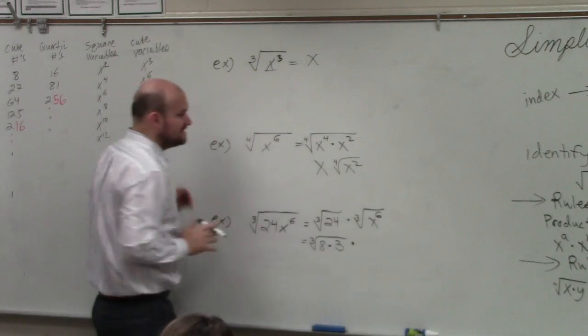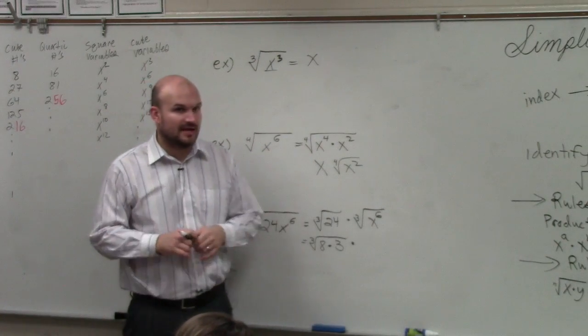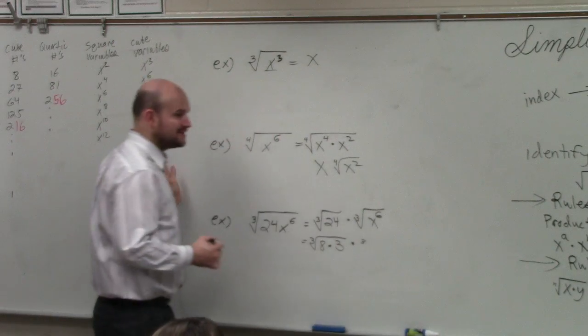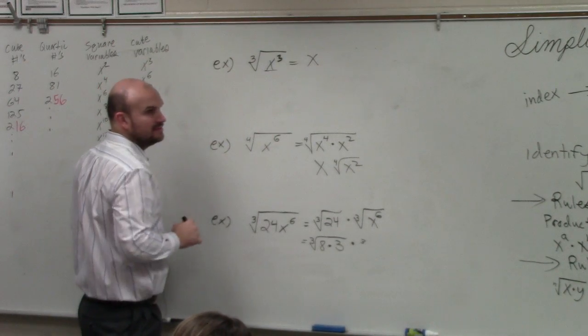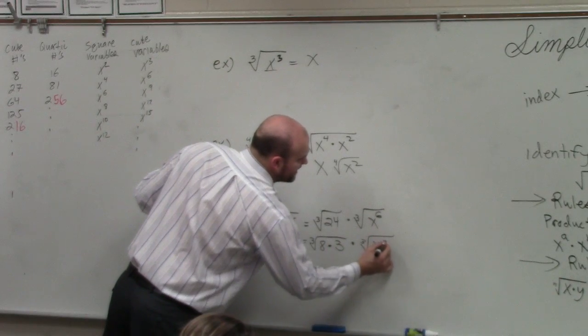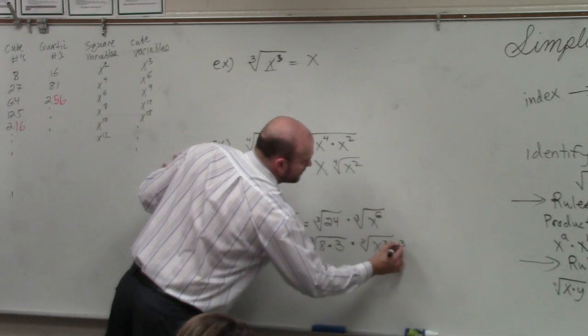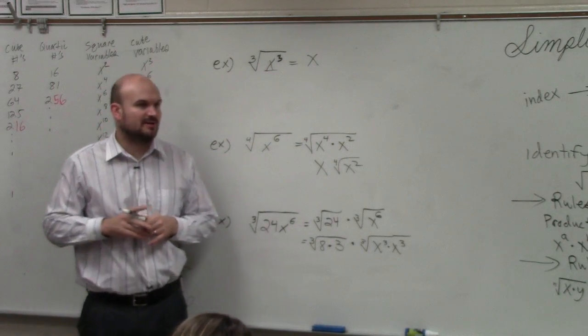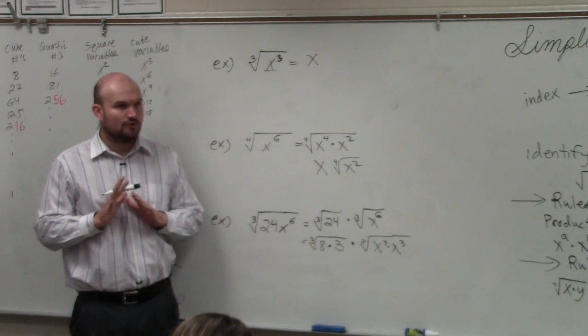And then is x to the 6, that's not the same as that one. However, I can write this as, would I want to use x to the fourth times x squared again? No. I'd want to use x cubed times x cubed. Because by the rules of exponents, that equals x to the sixth, because you add the powers. Is everybody OK with how I have rewritten this problem?